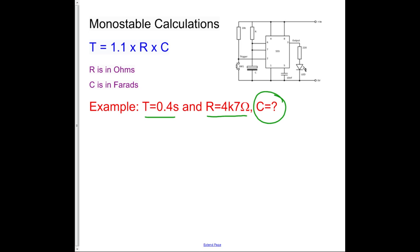Well, 4k7 is equivalent to 4.7 times 10 to the 3. 4.7 kilohms, which is 4700 ohms. So this 4k7 is a shorthand way of writing 4700 ohms.